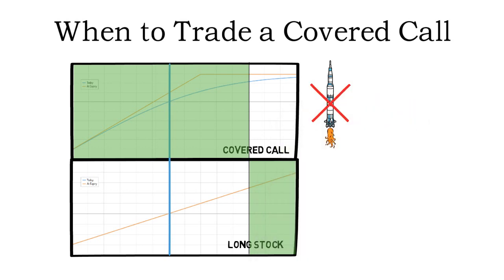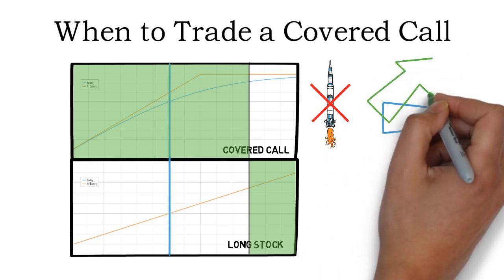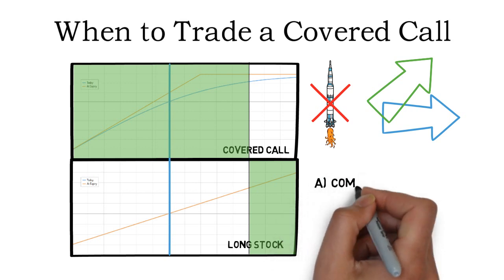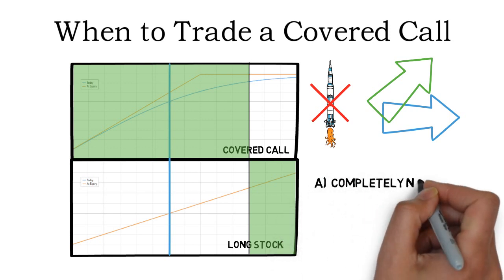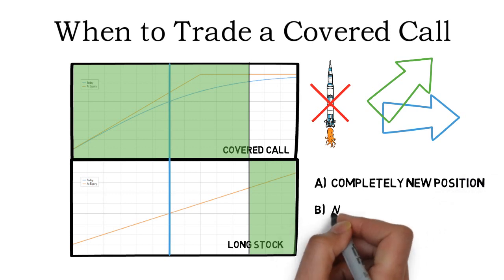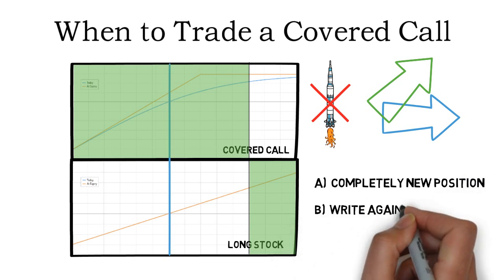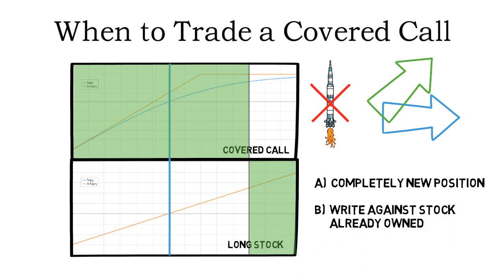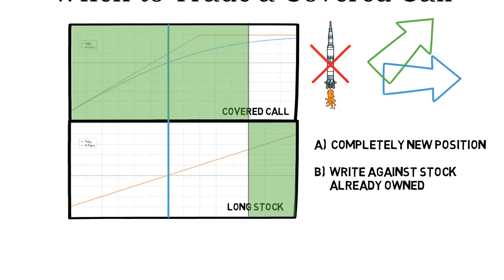However, if you are neutral to slightly bullish, a covered call position would be beneficial. There are two ways to put on a covered call position: either as a completely new position where you buy stock and sell the covered call, or you simply sell a call option against a stock that you already own. This means covered calls can be done on already existing stock positions. But once again, if you are very bullish on your current stock position, you should likely not put a covered call on it.